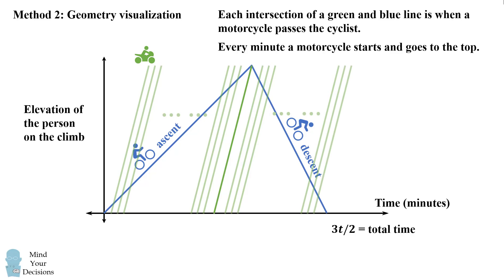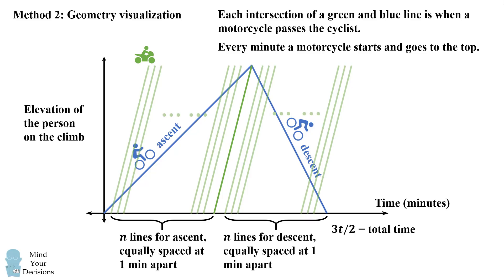Each intersection of a green line and a blue line is when the motorcycle passes the cyclist. We know that there are the same number on the ascent as the descent. So there will be n lines for the ascent equally spaced at 1 minute apart, and there will be n lines for the descent equally spaced at 1 minute apart.